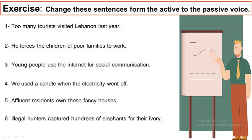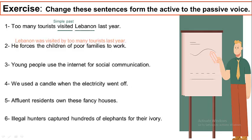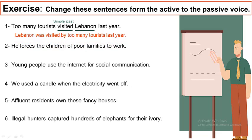Now this exercise is to be done by yourselves. I want you to pause this video and try to change these sentences from the active to the passive on your own. I'm sure that you will be able to do them correctly. Now I'm back to check your answers. Number one: too many tourists visited Lebanon last year. The verb is visited — it is in the simple past tense. What did many tourists visit? They visited Lebanon, so Lebanon is the receiver. Lebanon was visited by too many tourists last year.